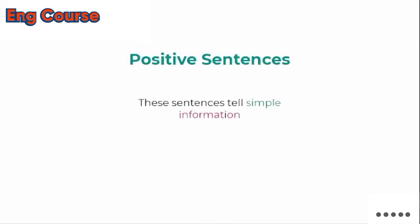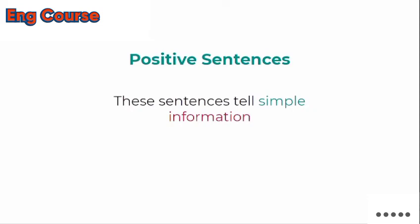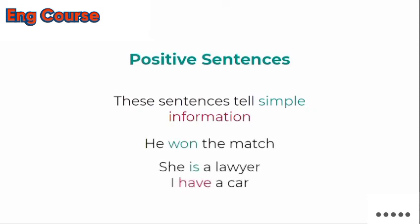Let's talk about the first type — positive sentences. Positive sentences tell simple information. For example: 'He won the match.' 'The match has been won.' 'She is a lawyer.' 'I have a card.' These are all simple information, so we will call them positive sentences.